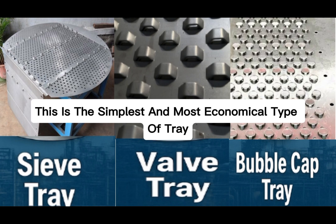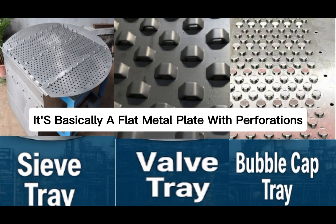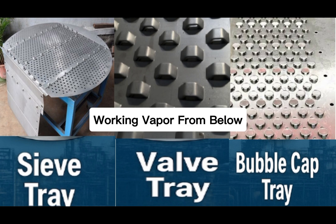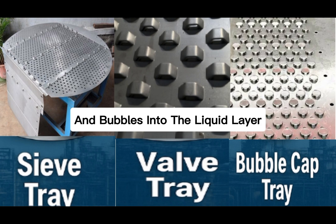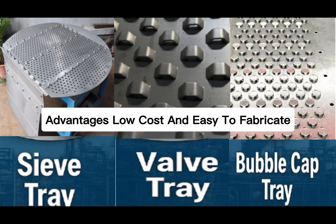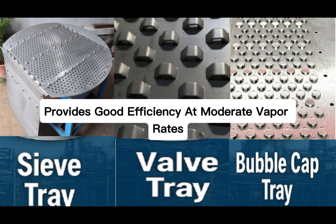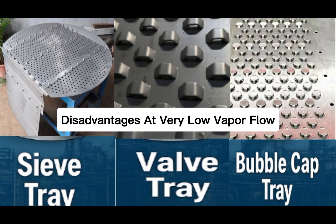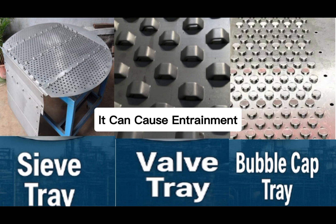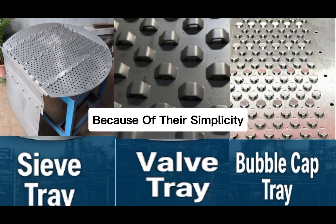Sieve trays are the simplest and most economical type of tray used today. The design is basically a flat metal plate with perforations — holes — with no caps or valves, just holes through which vapor passes. Vapor from below the tray rises through these holes and bubbles into the liquid layer, creating good mixing. The liquid flows across the tray and then down through the downcomer to the next tray. Advantages: low cost and easy to fabricate, easy to clean and maintain, and good efficiency at moderate vapor rates. Disadvantages: at very low vapor flow, liquid can leak through the holes — this is called weeping — and at very high vapor rates it can cause entrainment, where vapor carries liquid droplets upward. Still, sieve trays are widely used because of their simplicity and good overall performance.